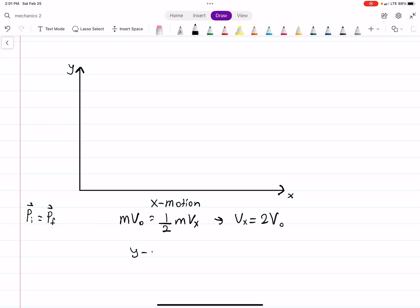For the Y direction, if one of the pieces is moving up with velocity V0, the other has to move with velocity minus V0. That's to keep momentum conserved.